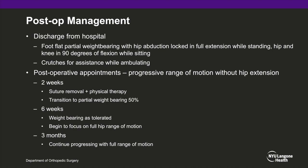During post-operative appointments, progressive range of motion of the hip was employed. At two weeks, she began physical therapy and transitioned to partial weight-bearing at 50%. At six weeks, she began weight-bearing as tolerated with full hip range of motion exercises. At three months, she continued to progress with full hip range of motion. At six months, the patient had progressed well, completing hamstring strengthening exercises and returning to full hip range of motion without pain, and returned to her pre-injury activity level with no limitations as a fitness instructor.